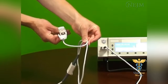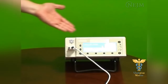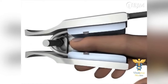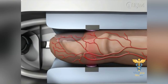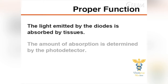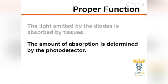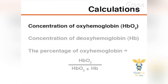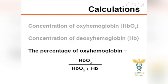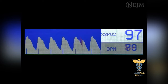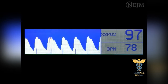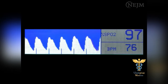Pulse oximeters consist of a peripheral probe and a small microprocessor unit. Traditionally, the peripheral probe contains a photodetector and two light-emitting diodes. The two light-emitting diodes emit light of different wavelengths. The light emitted by the diodes is absorbed by tissues, and the amount of absorption is determined by the photodetector. Using this information, the microprocessor determines the concentration of oxyhemoglobin and deoxyhemoglobin, then calculates the percentage of oxyhemoglobin and displays the hemoglobin oxygen saturation in arterial blood, a waveform corresponding to the pulsatile flow in arterial vessels, and the heart rate.